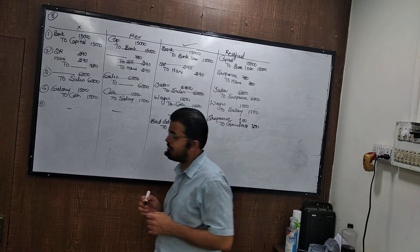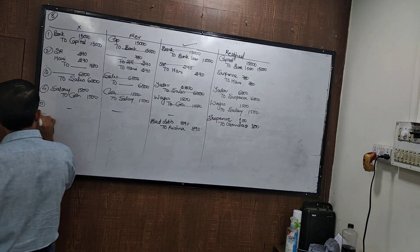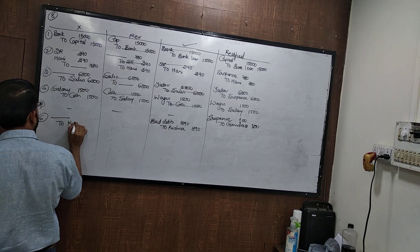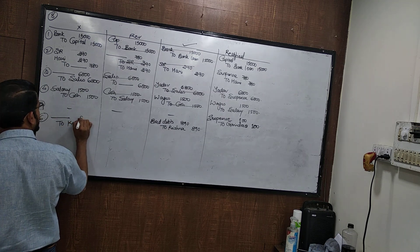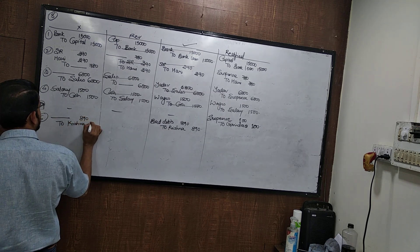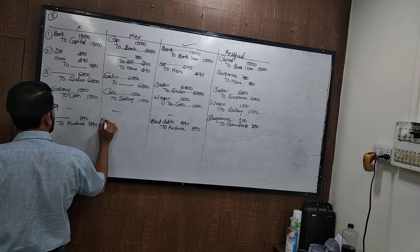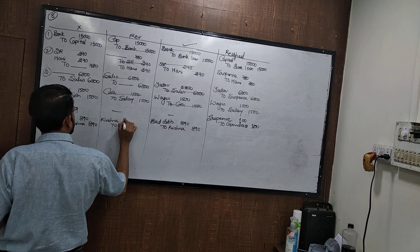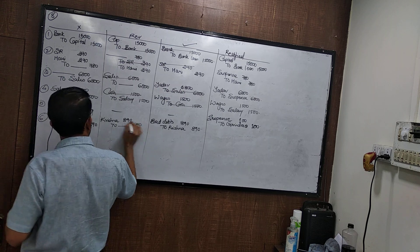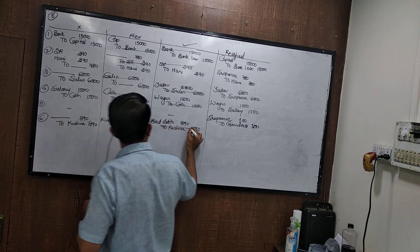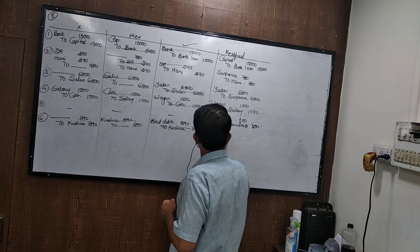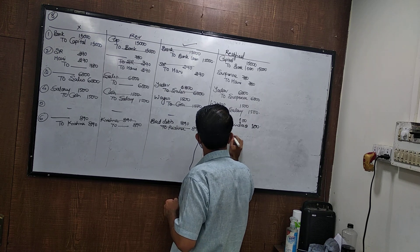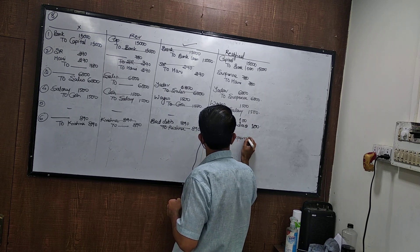Purchase to Ajay 3500 — why is it wrong? If you have written in the journal, then the ledger is automatically wrong. Correct: purchase to Ajay 3500. Wrong: purchase to Ajay 35,000. Reverse: Ajay to purchase 35,000. Rectified: Ajay to purchase 31,500.